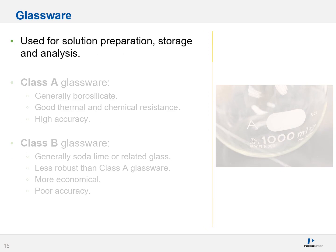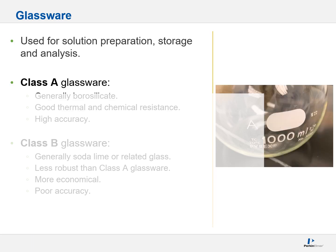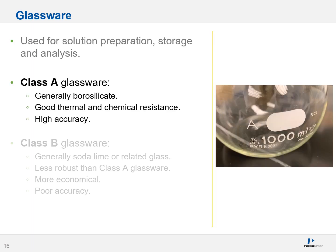Let's discuss glassware. Glassware is used for solution preparation, storage, and analysis. The first major type you will encounter is class A glassware, which is generally borosilicate and provides good thermal and chemical resistance. The real strength of this glassware is its exceedingly high accuracy. Class A glassware is arguably the preferred choice when available. To identify it, look for a large 'A' designated somewhere on the glassware.